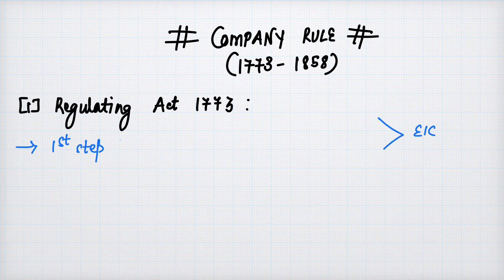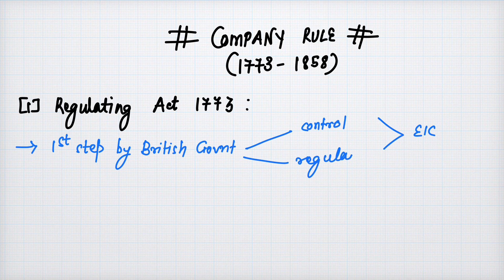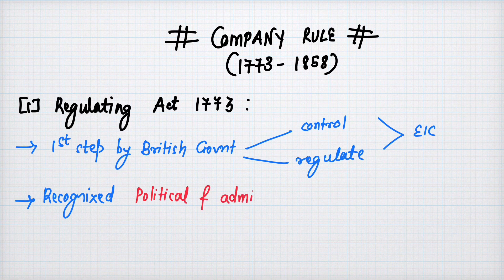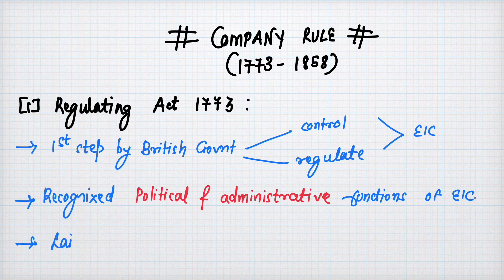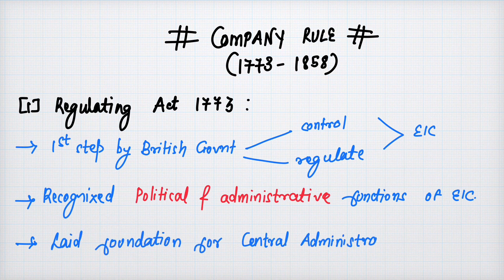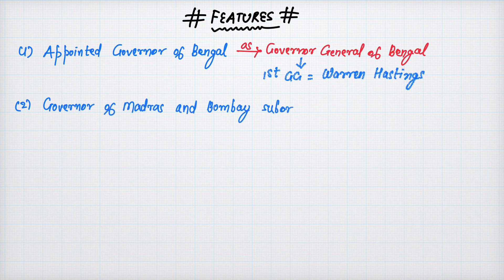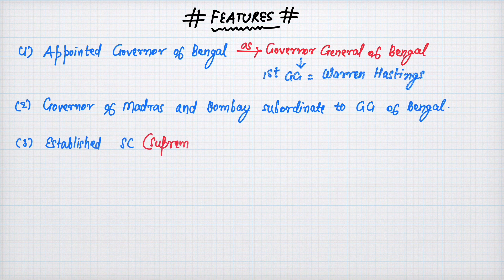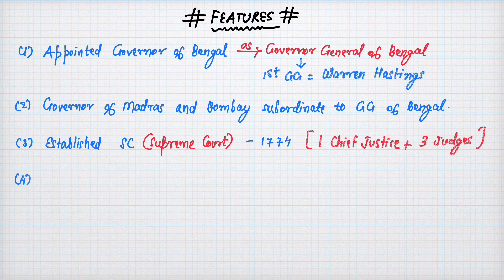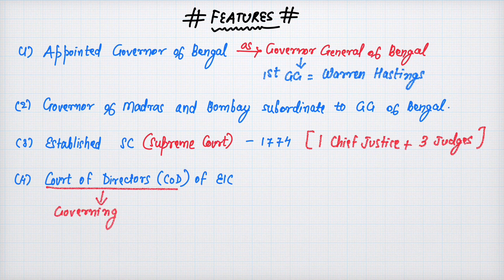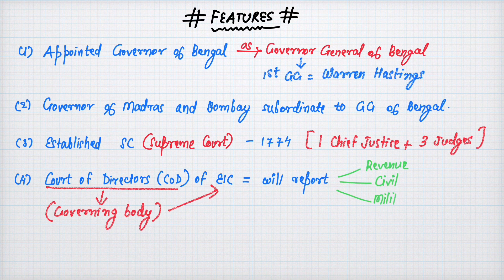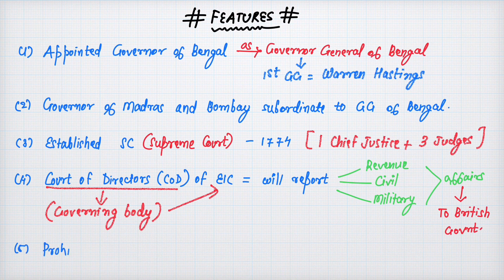Starting with company rule: the first act is the Regulating Act of 1773. This was the first step by the British government in controlling and regulating the East India Company. It recognized the political and administrative functions of the EIC and laid the foundation for central administration in India. This act appointed the Governor of Bengal as Governor General of Bengal — the first was Warren Hastings.